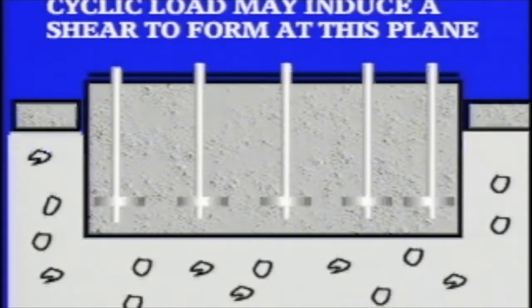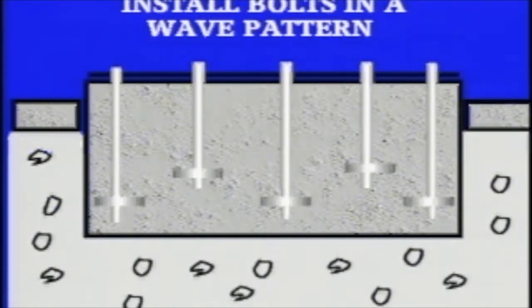Anchor bolts should not be located along the same horizontal plane in a foundation. Otherwise, cyclic loads may induce a shear condition to form at this plane. To alleviate this problem, install the bolts in a wave pattern.